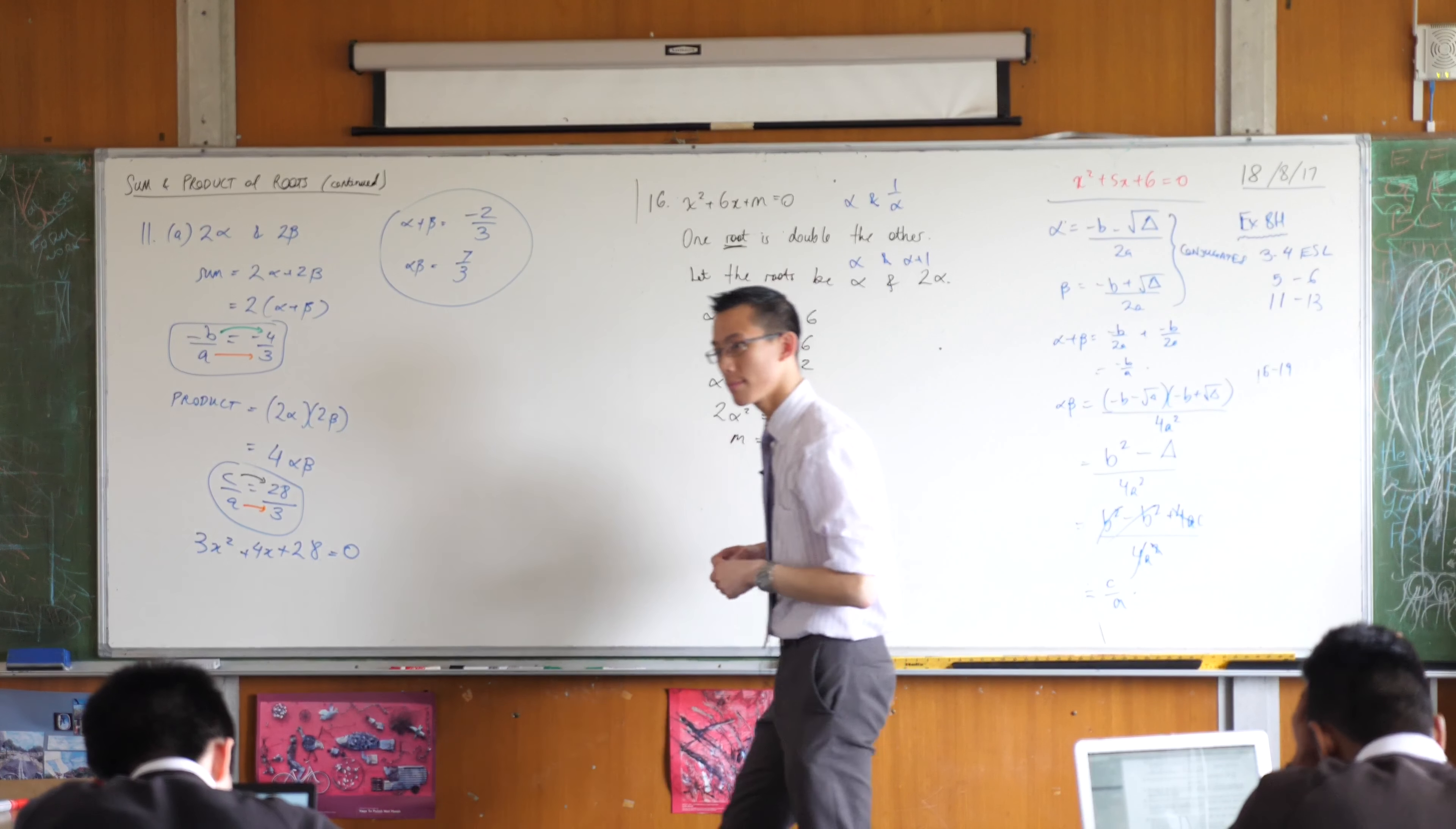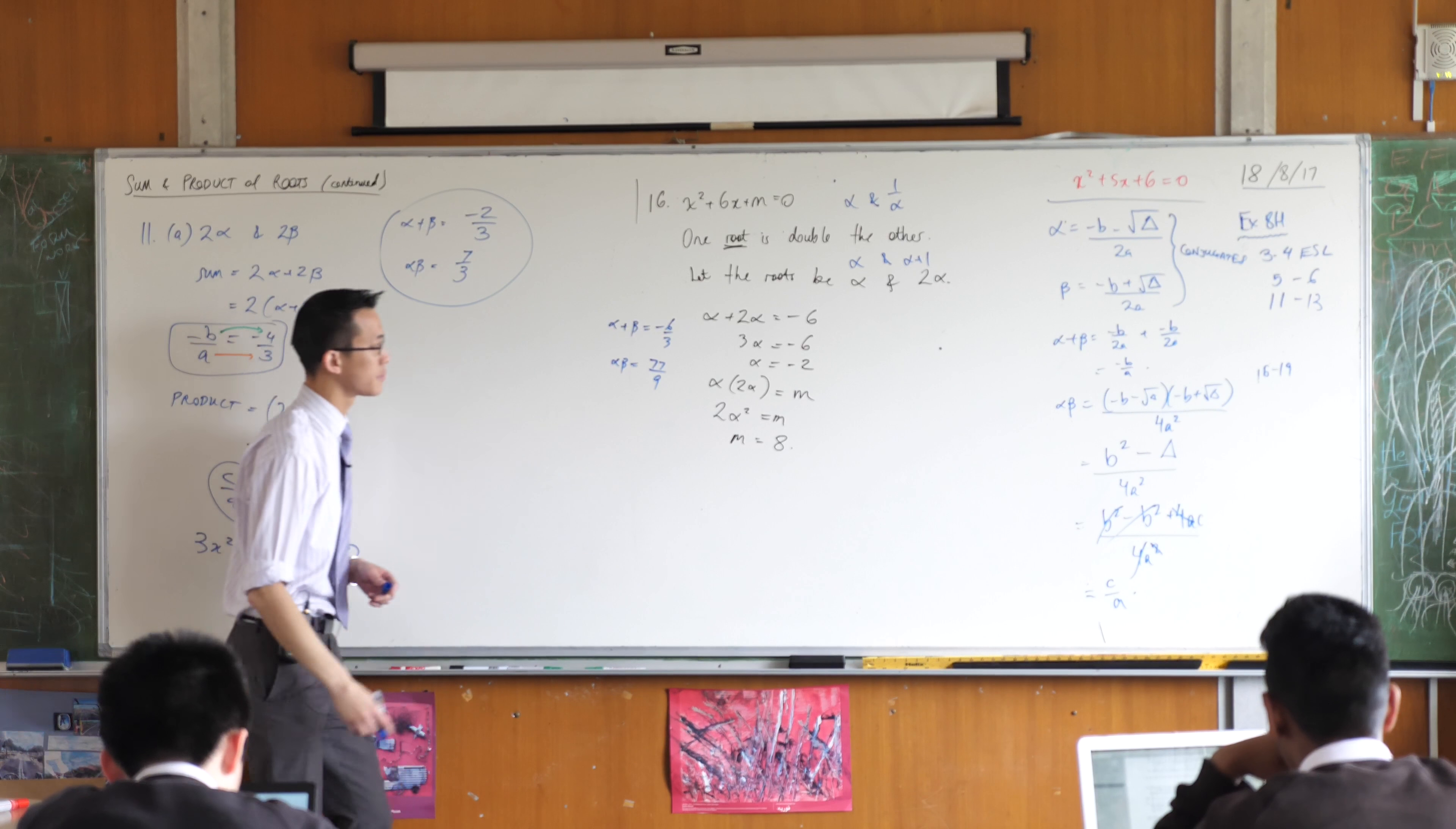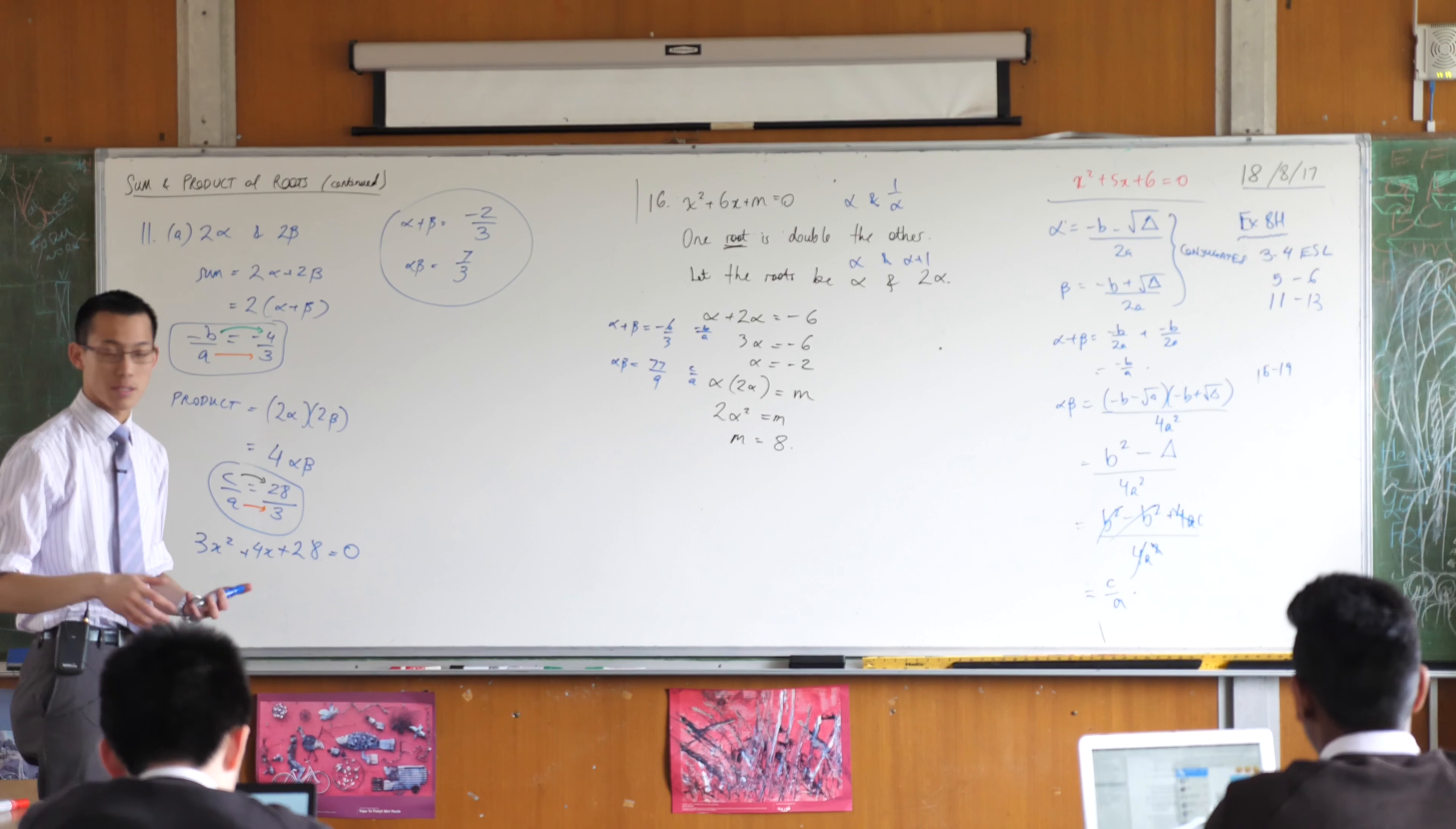Say if the sum of the roots is negative 6 over 3 and the product of the roots is 77 over 9. Whoa, slow down. Sum of the roots is minus what? And the product? 77 over 9. Can I say that a is 3 while c is 77 over 3? Okay, so this is minus b over a and this is c over a. So you can do this whichever way you like. Just as a suggestion for you, I like to keep things integer as much as possible.